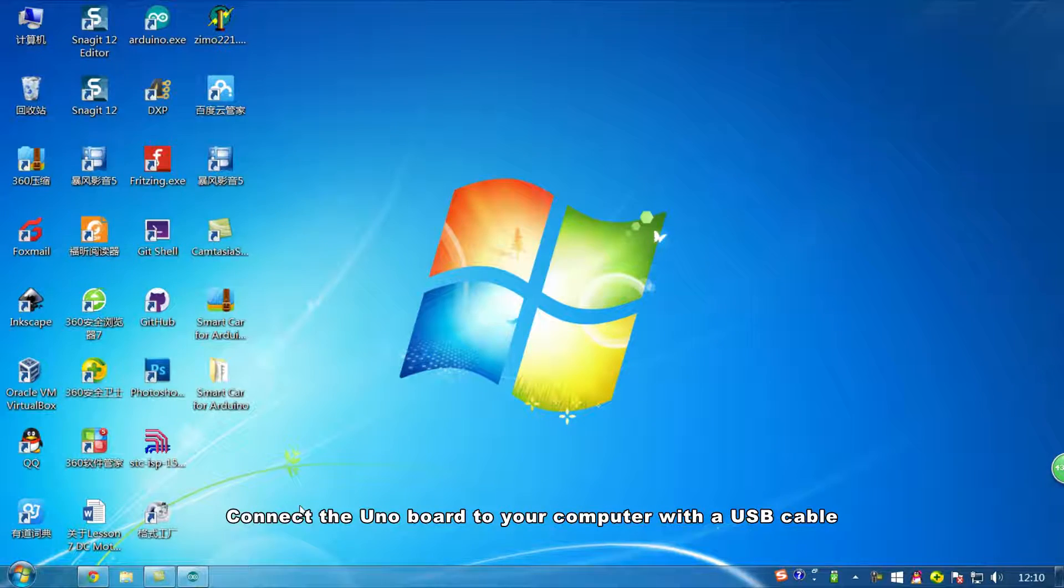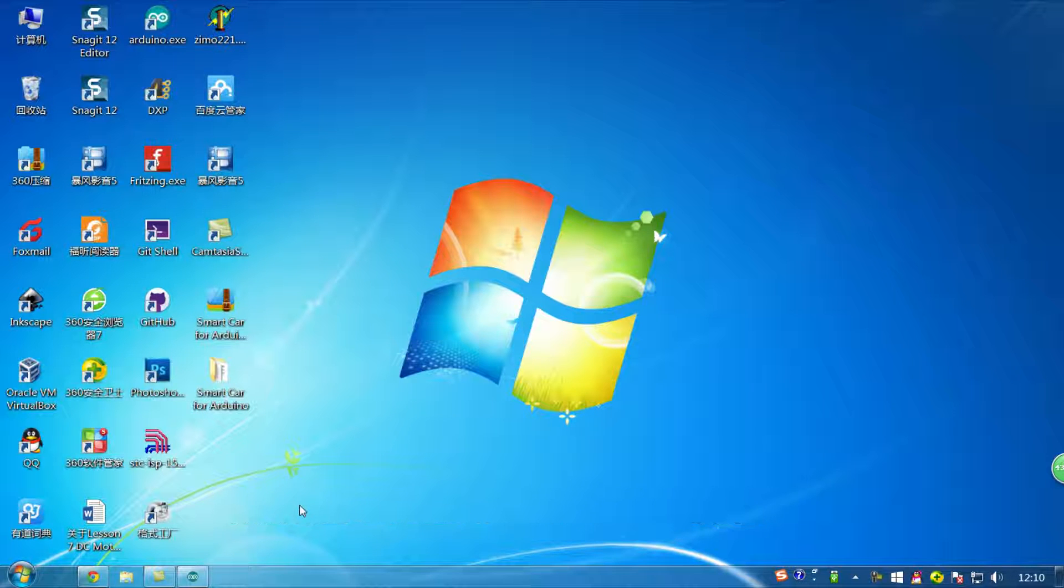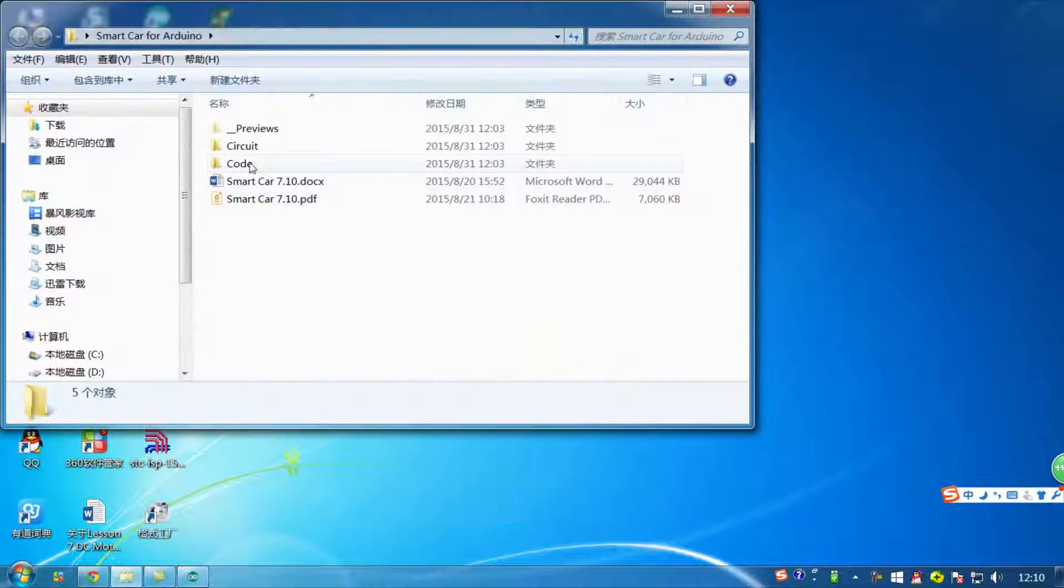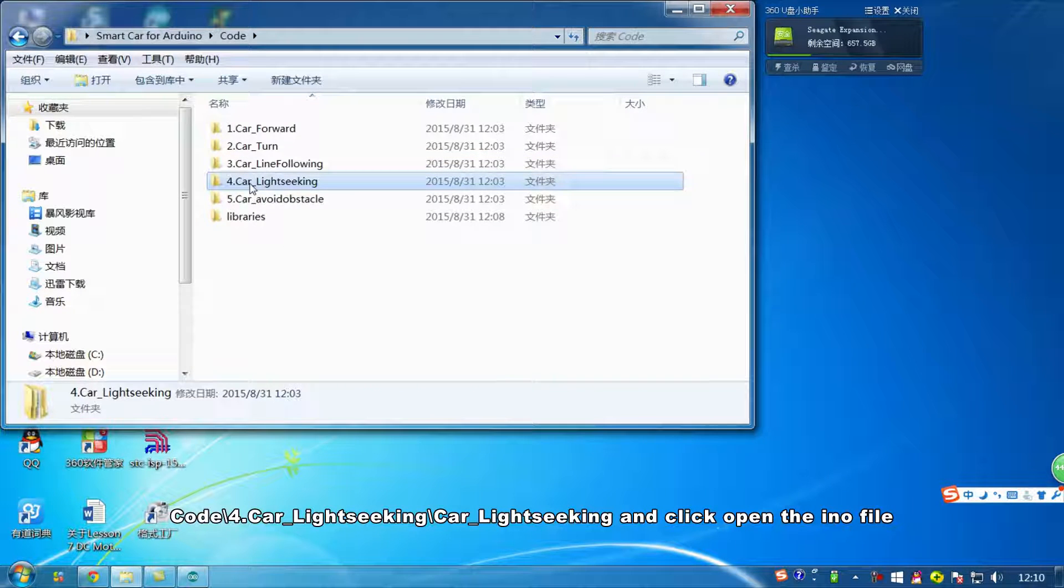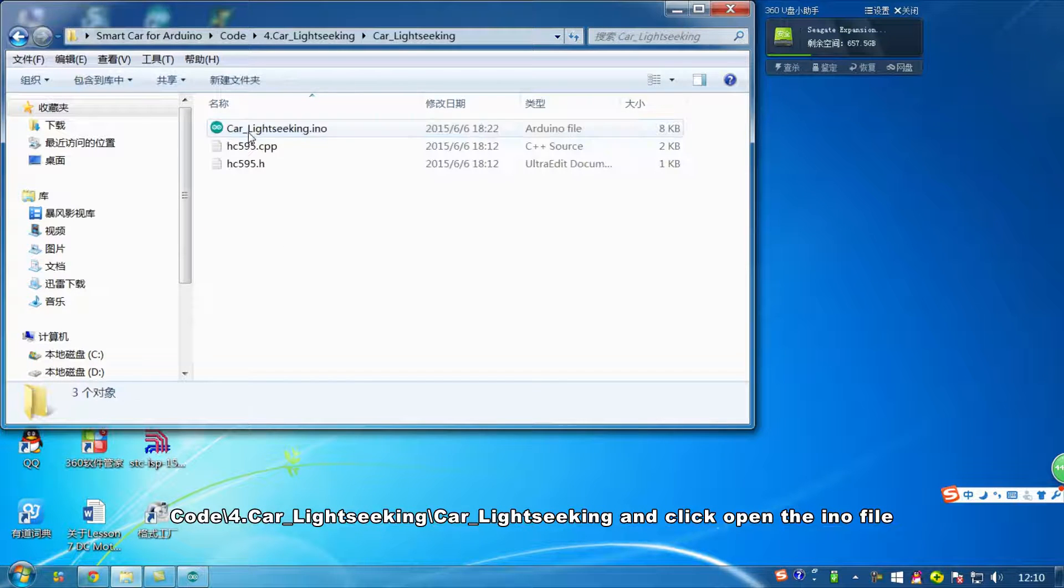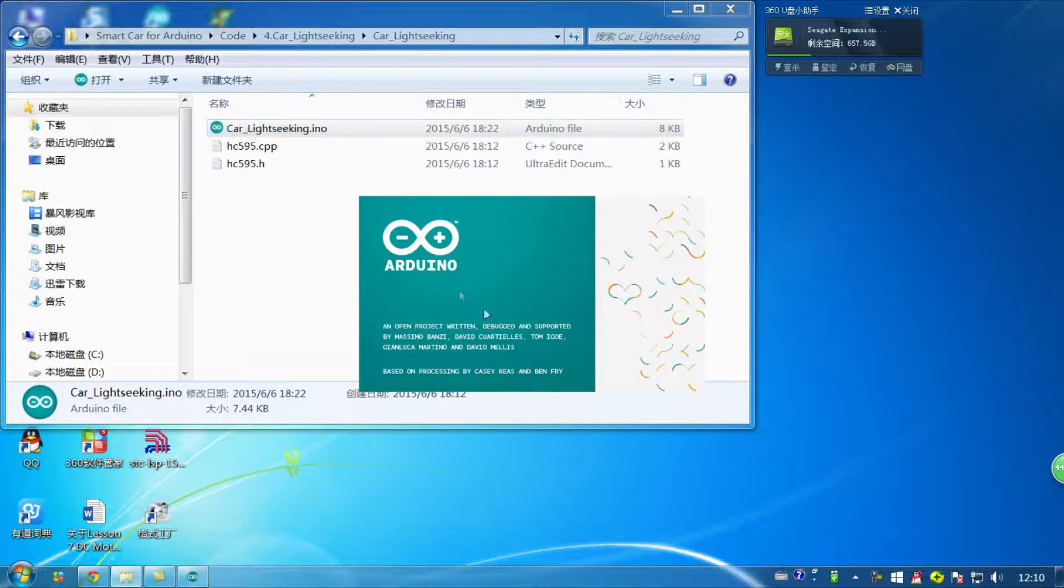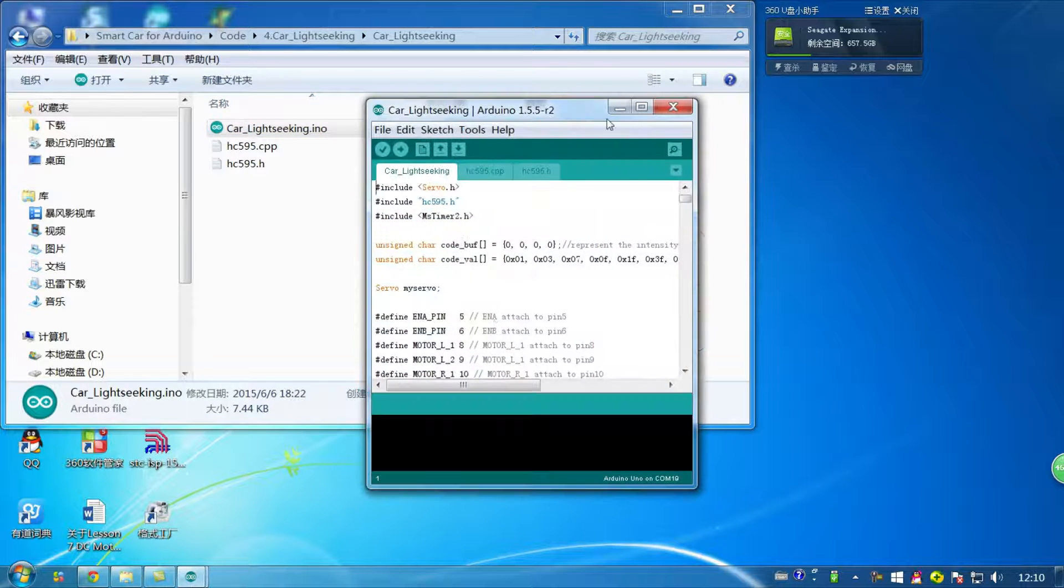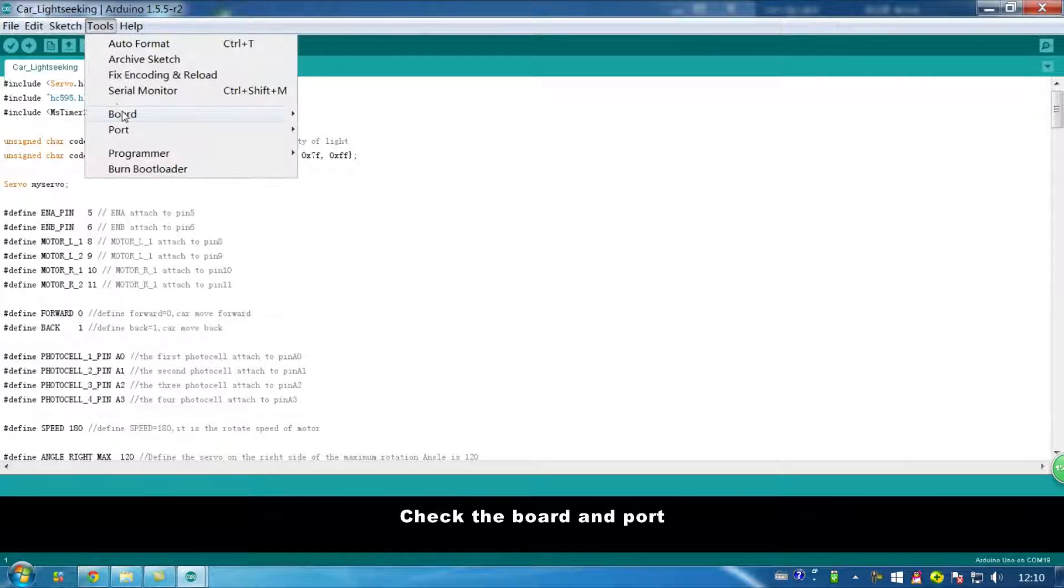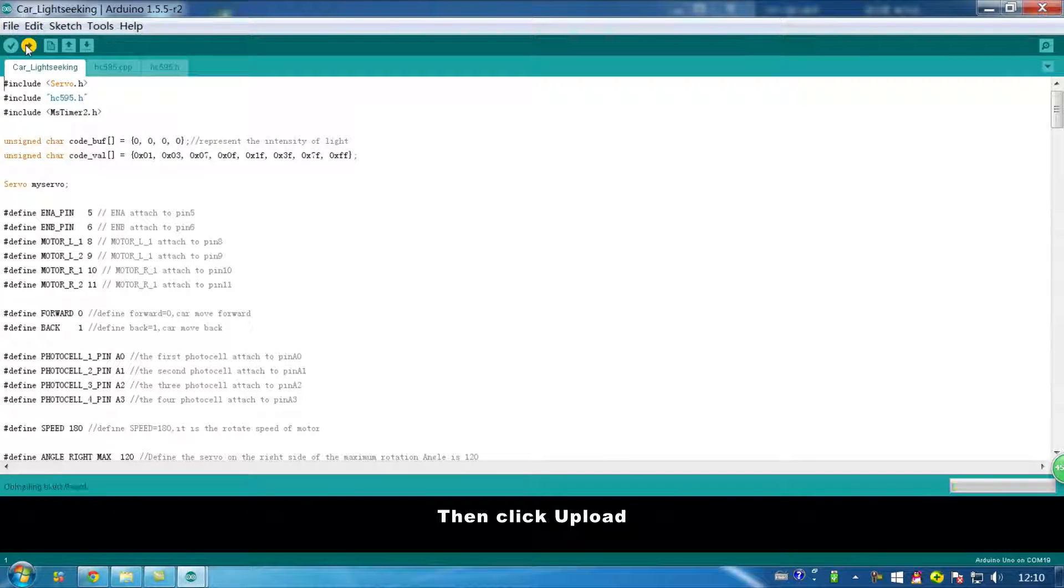Connect Uniboard to a computer with a USB cable. Go to the folder you just downloaded, then go through the path code 4.CarLightSeeking and click open the inner file. Then click Tools, check the board and the port, then click Upload.